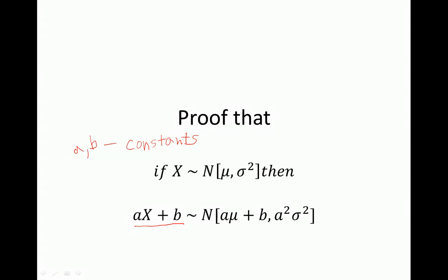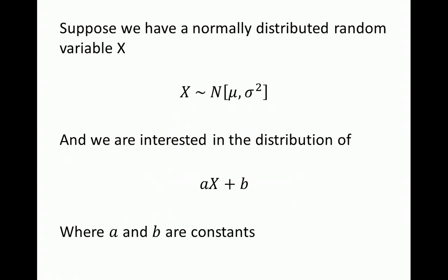The linear transformation aX plus B is normally distributed with mean a times mu plus B and variance a squared times sigma squared. Suppose we have a normally distributed random variable X, with mean mu and variance sigma squared, and we are interested in the distribution of the linear transformation Y equals a times X plus B, where a and B are just some constants.